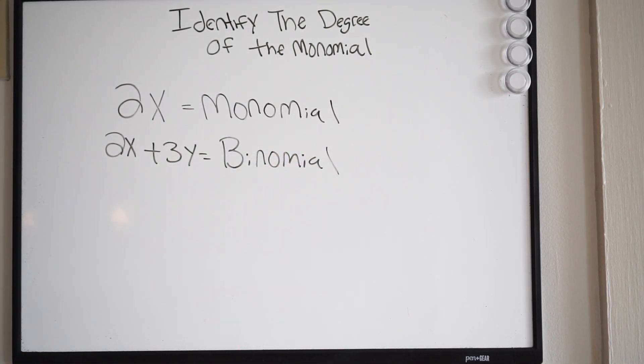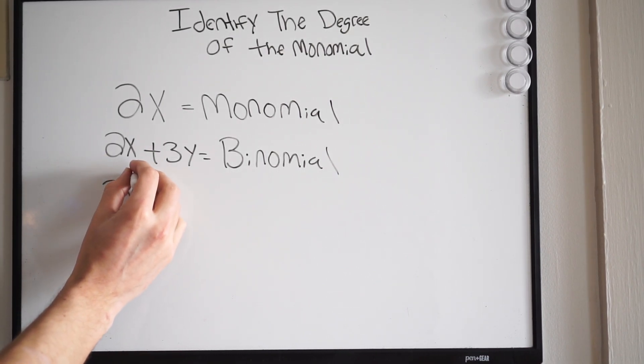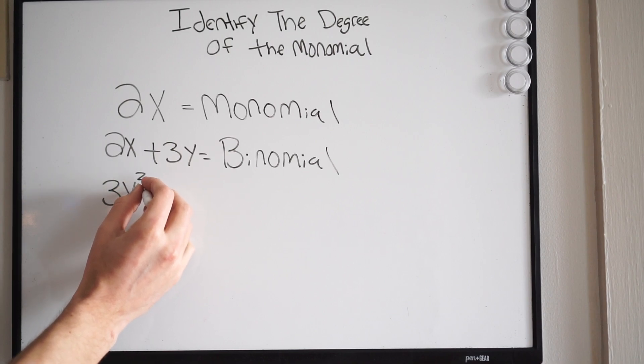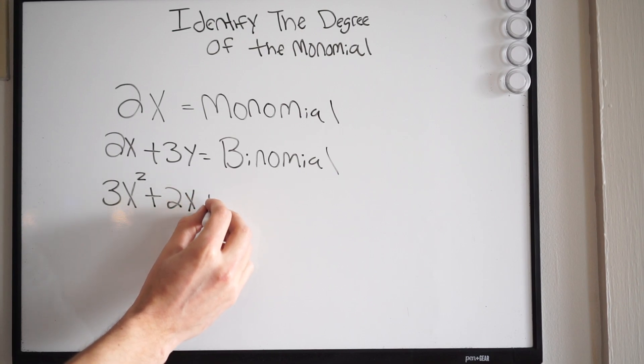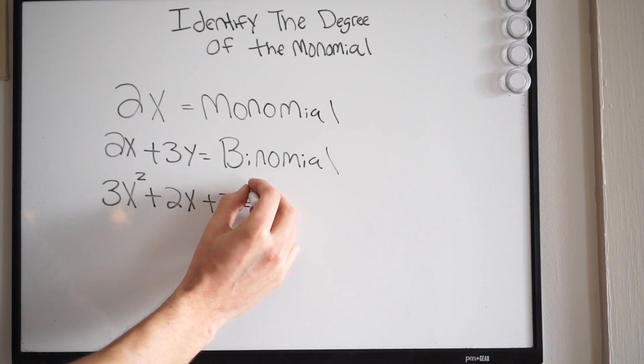Alright, and if we have three terms, well, that's just simply going to be called a trinomial. So 3x squared plus 2x plus 2. This is a trinomial.